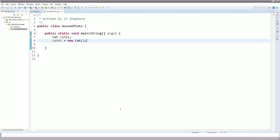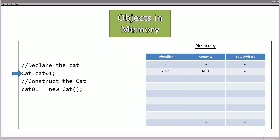Let's look at what happens inside memory. The identifier currently has nothing — it's null. Once we call the constructor, let's say this object is created at memory address 40, with name none, weight 1, and numberOfLegs 4. After the constructor call, cat01 gets assigned the memory address 40 — cat01 refers to or points to that memory address. Always keep in mind: the identifier only holds a memory address, and its contents like name, weight, and numberOfLegs are somewhere else in memory.